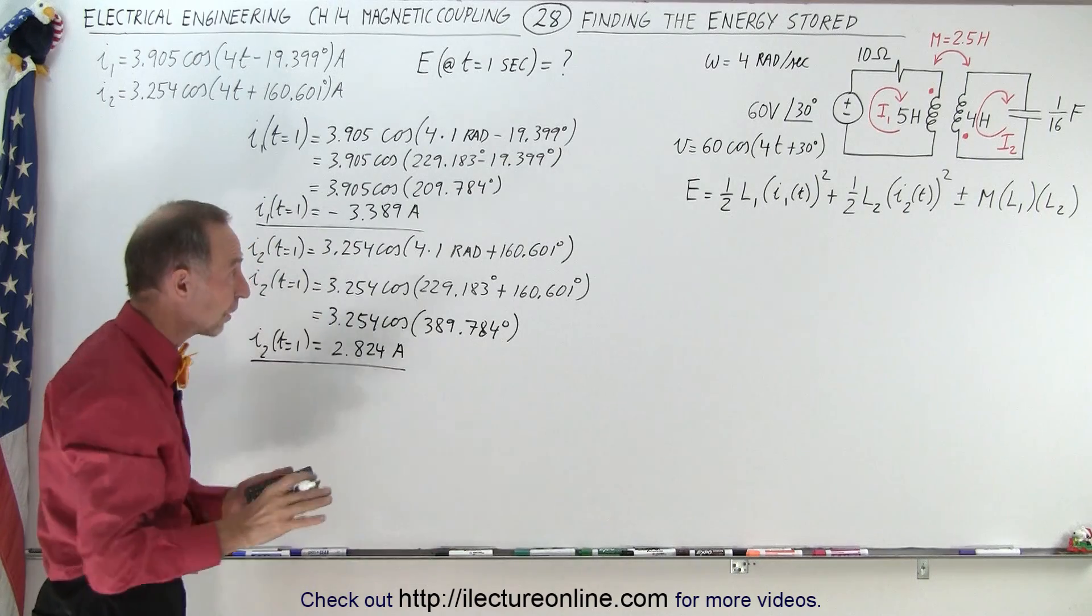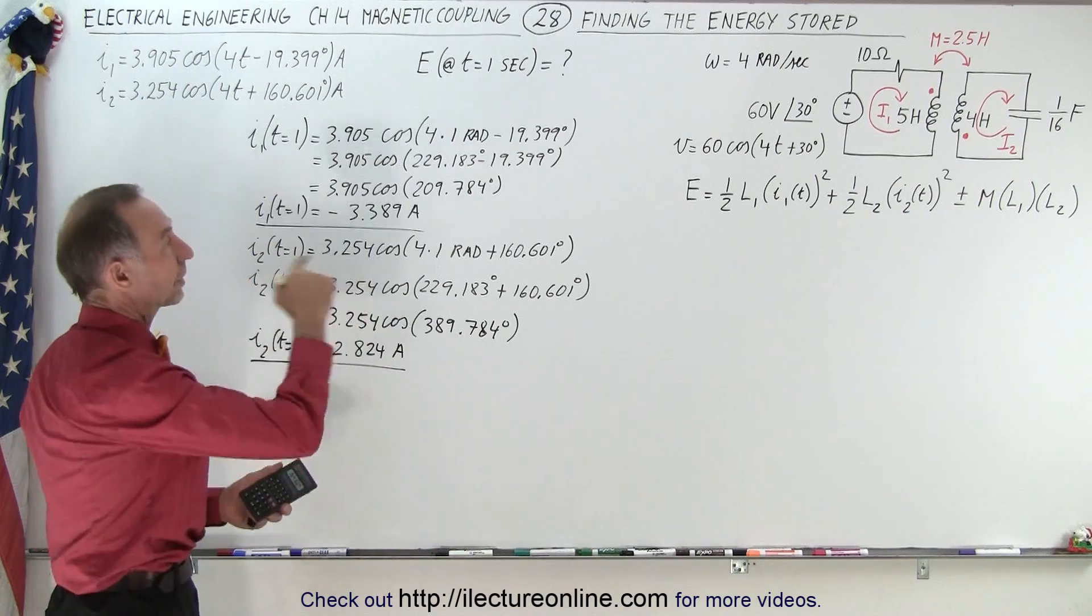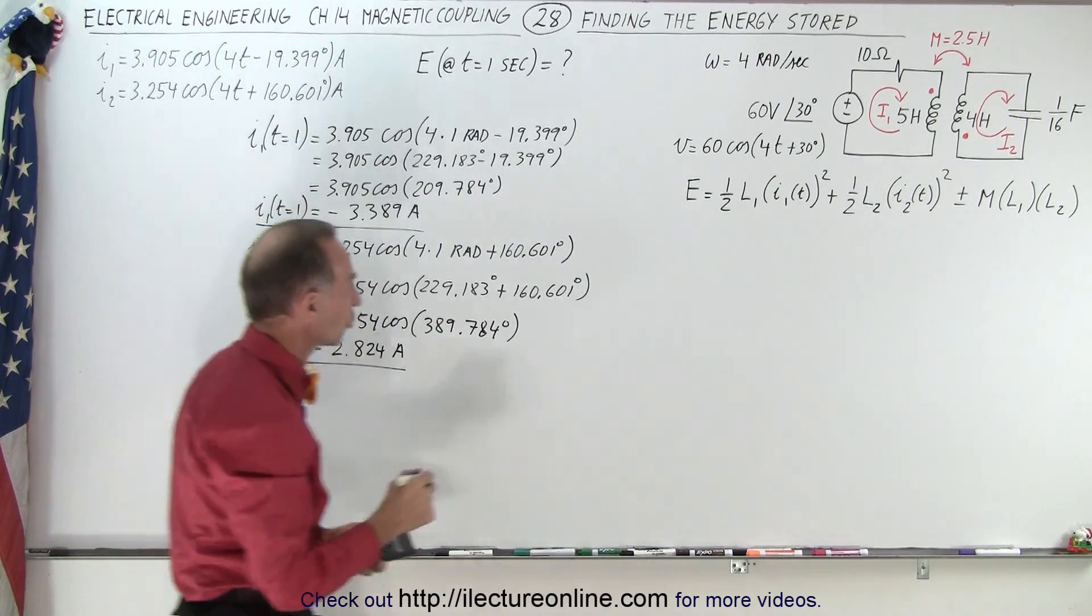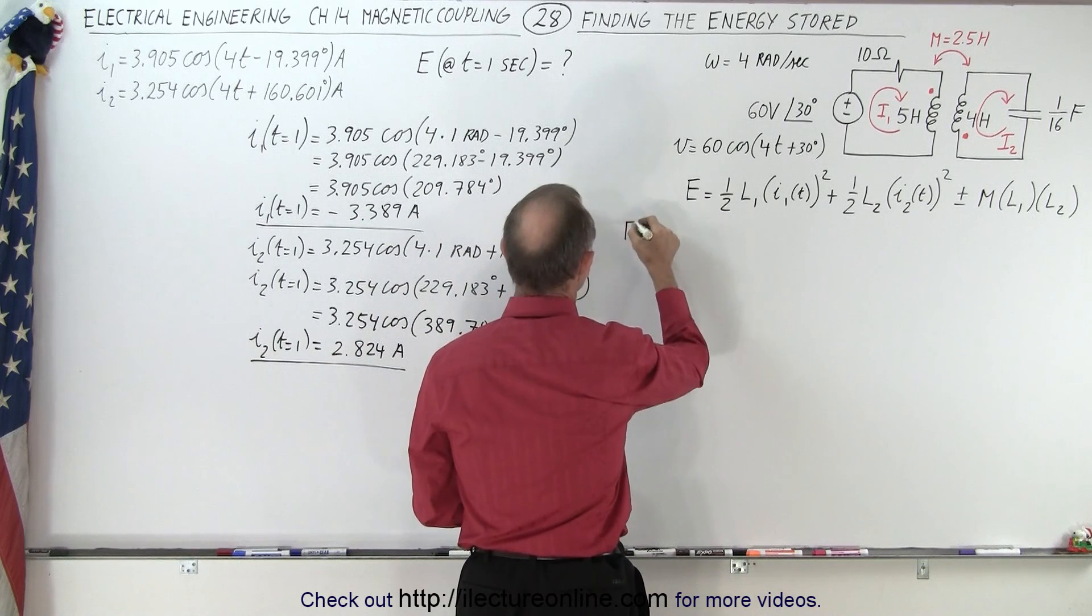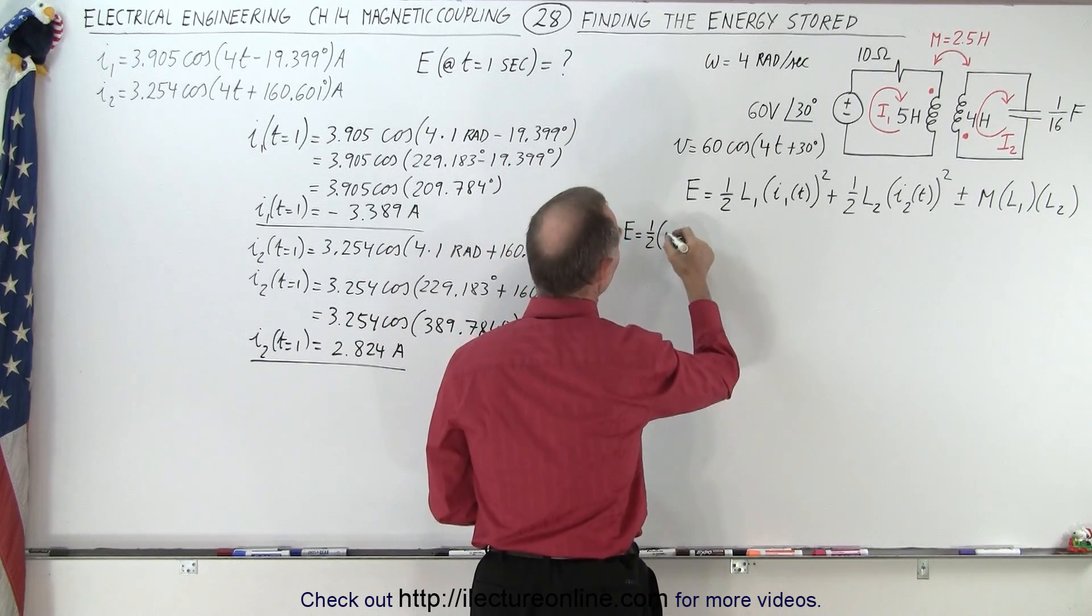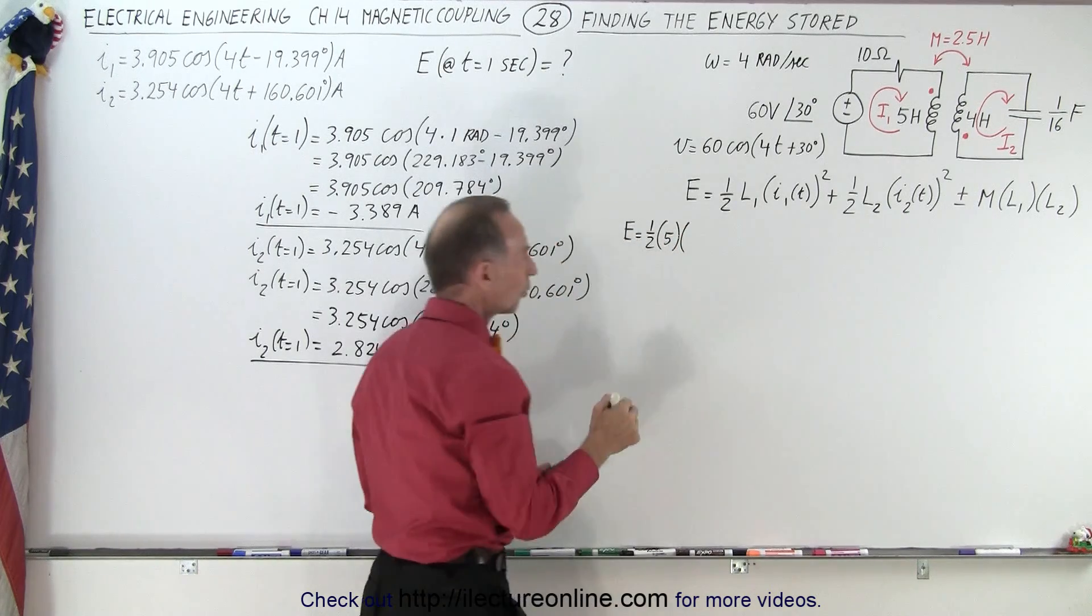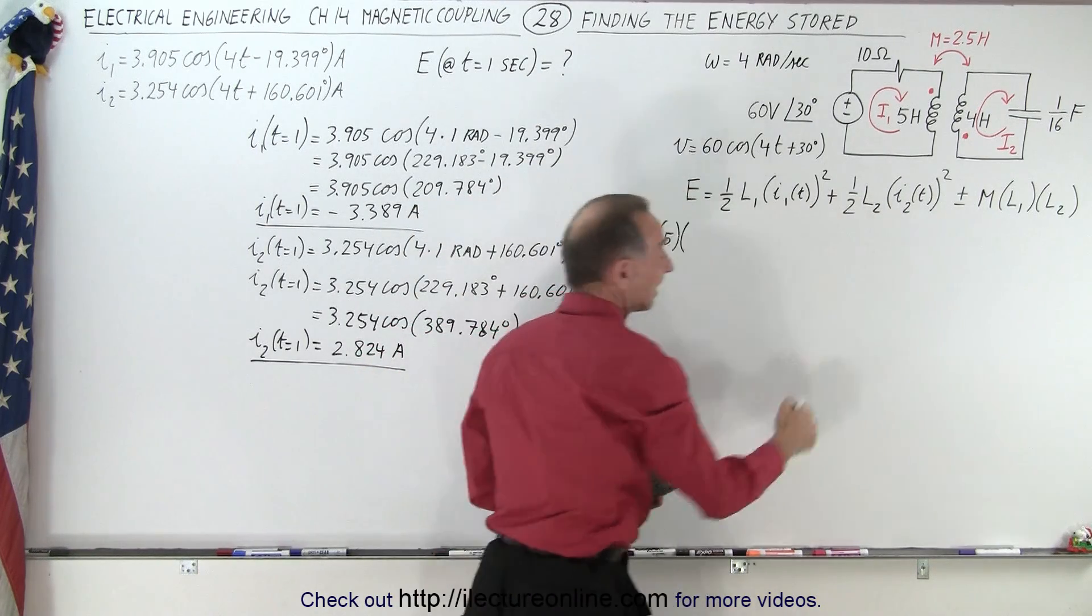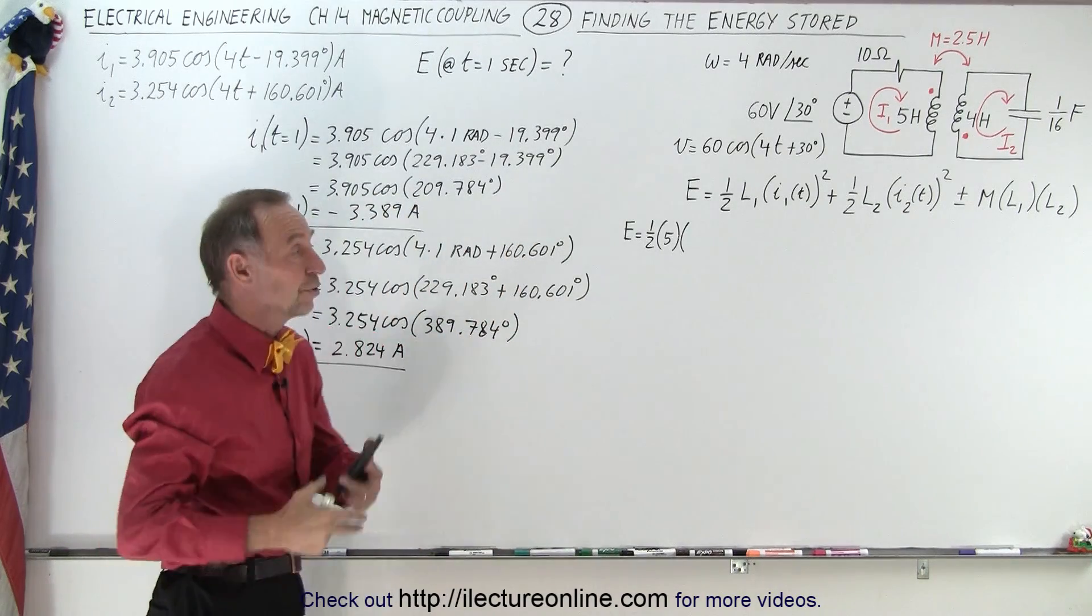Now that I have the two currents at that moment in time, I can plug that into the equation. The energy is equal to 1.5 times L1, which is 5, times the current squared.